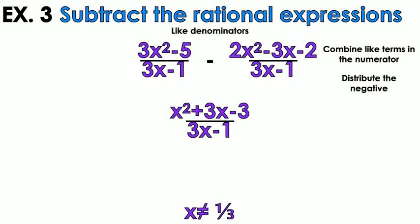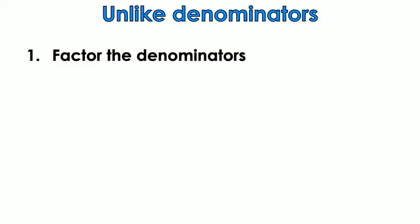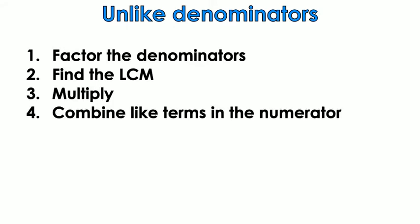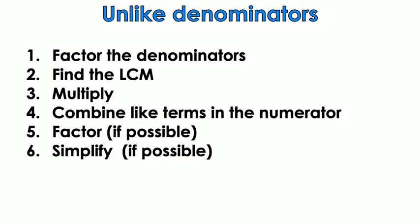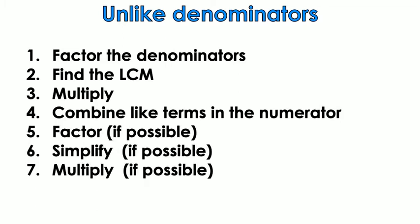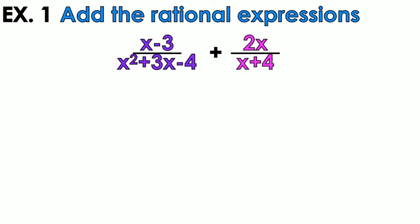Life is a little different if you have unlike denominators. First you have to factor the denominators, then find the least common multiple to get like denominators, multiply, combine like terms, and factor and simplify if possible. We have six examples to do together.